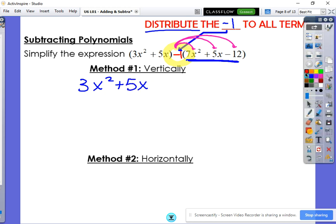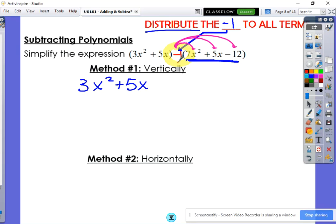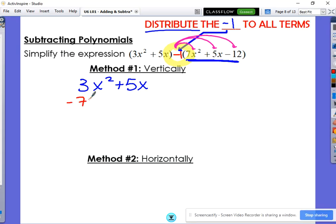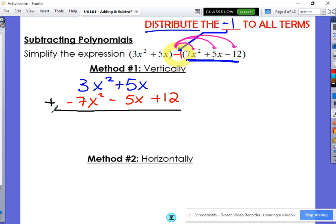3x squared plus 5x. Notice I'm going to be doing this one vertically. But when we distribute the negative one, this becomes negative 7x squared, negative 5x, and positive 12. So now that you've distributed the negative one, now you simply just combine like terms as you normally would.